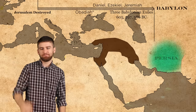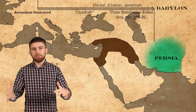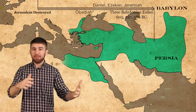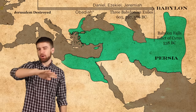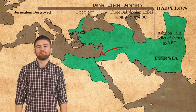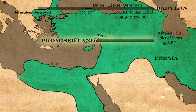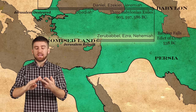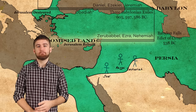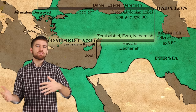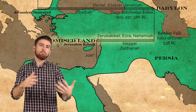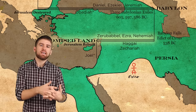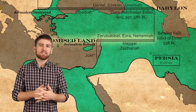Then in came Persia. The Persians conquered the Babylonians and all of their land and in 538 BC, King Cyrus made a decree that all of the Jews could go back home. In three waves led by Zerubbabel, Ezra, and Nehemiah respectively, the Jews went back into Israel and rebuilt Jerusalem and the temple. Haggai, Zechariah, and probably Joel prophesied during this time. Now we know that some of the Jews didn't return home because the story of Esther takes place in Persia after the three waves of returning exiles.